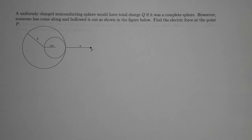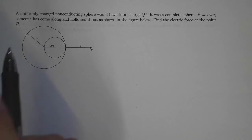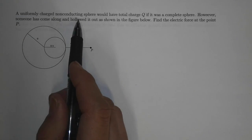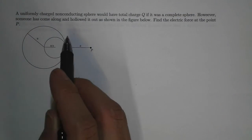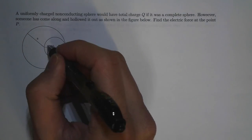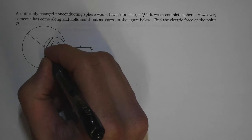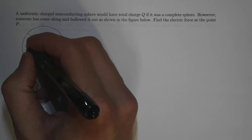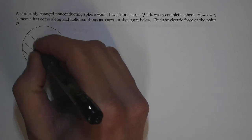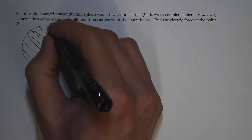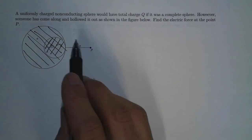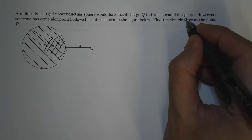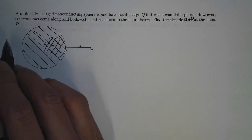This next problem is an extremely slick exercise in Gauss's law. A uniformly charged non-conducting sphere would have total charge Q if it was a complete sphere. However, someone has come along and hollowed it out as shown in the figure below. Find the electric force field at point P.